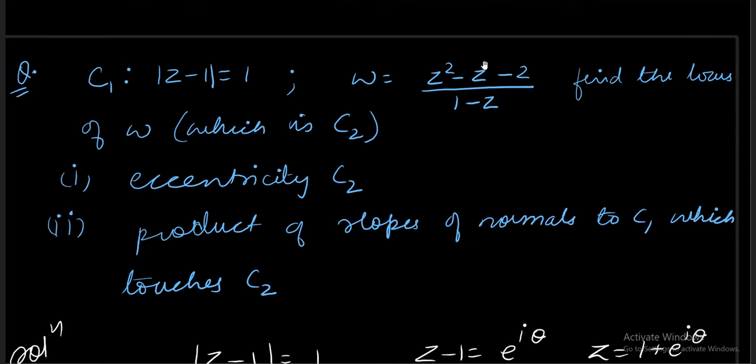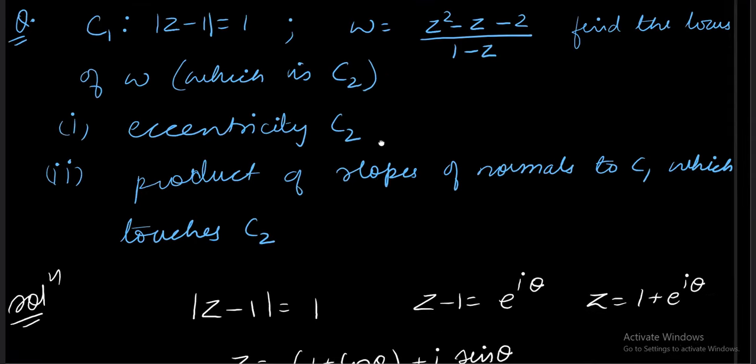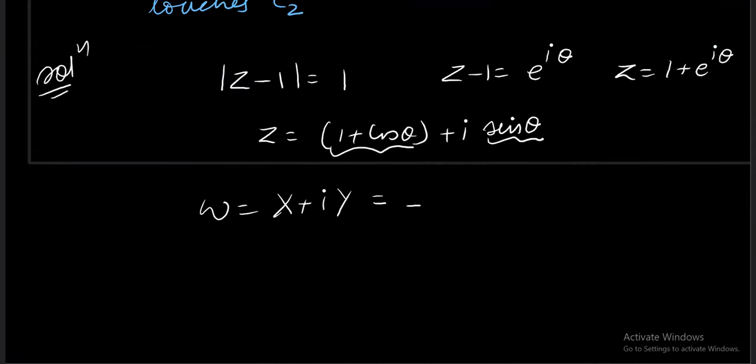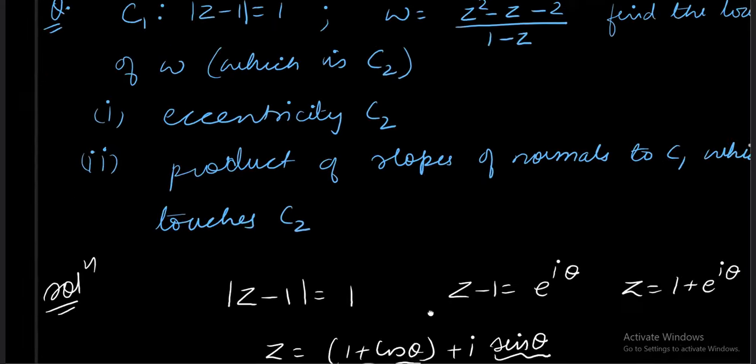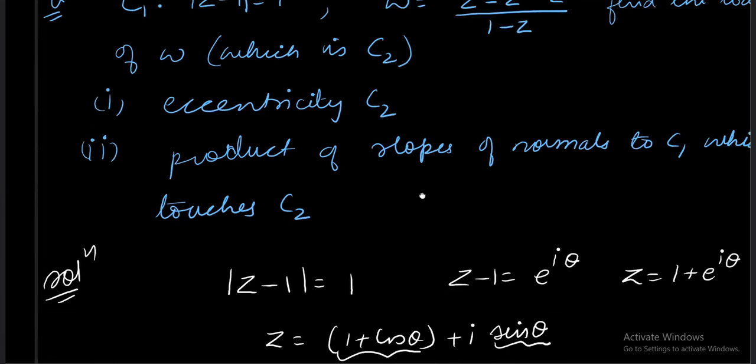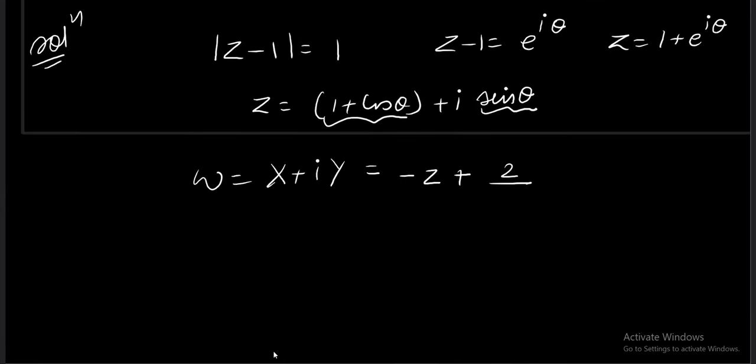First two terms and last term ko separate karte hai. This becomes z common and z minus 1. So minus z remains. And then I can write plus 2 divided by z minus 1.